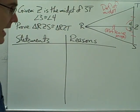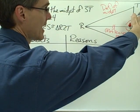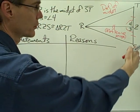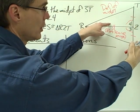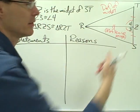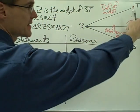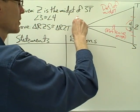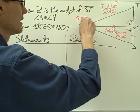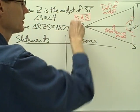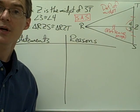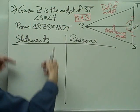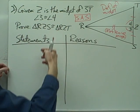So now what I have is two sides and the included angle of one triangle congruent to two sides and the included angle of another triangle, and I recognize that as my side-angle-side postulate. So I'm going to be using the side-angle-side postulate to show that these two triangles are congruent. Let's write down each one of the pieces of information that we have.